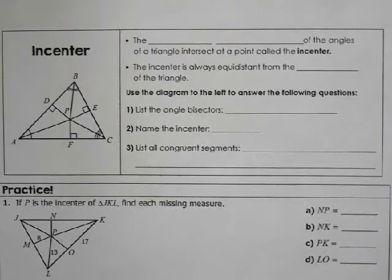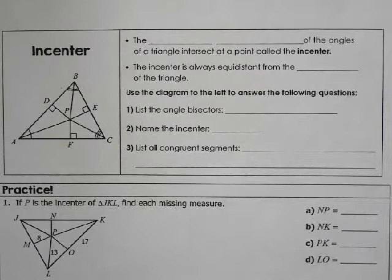To continue our talk on special points in a triangle, this particular point that we're going to talk about is called the incenter, and this is created by the angle bisectors of a triangle.